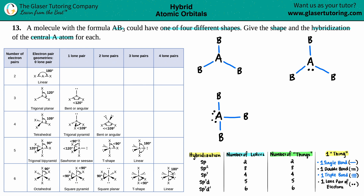You probably know what the fourth one's going to be: A in the middle surrounded by three B's. I'll make those bonds and now add the electrons — one, two, and three lone pairs. That's the four. I just drew the four shapes, and now let's give the shape name for each.